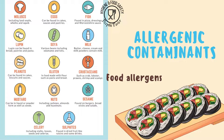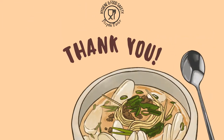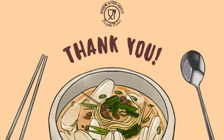Common food allergens include gluten, peanuts, eggs, milk, soy, fish, and mustard. So these four types — biological, chemical, physical, and allergenic contaminants — are the four types of unwanted substances or materials that can be present in food and which can harm the person who consumes them.